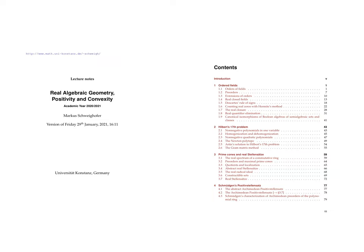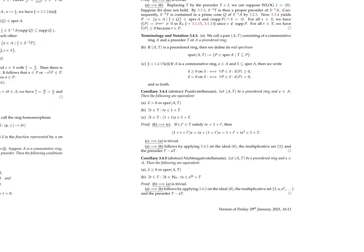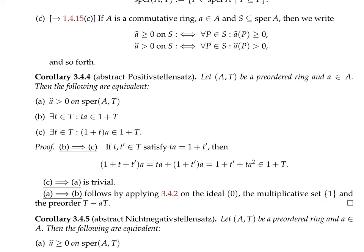If you remember the abstract Realstellensatz, there was this special case of it, namely the abstract Positivstellensatz, which is very important. If (A,T) is a pre-order ring and a in A, then if you view a as a function on the real spectrum, it's strictly positive pointwise on the real spectrum of this pre-order ring if and only if there is an algebraic certificate of this form, and here you have this multiplier t.